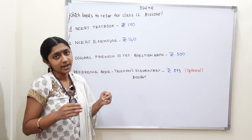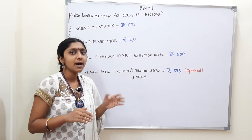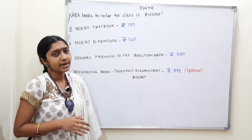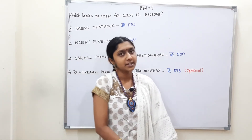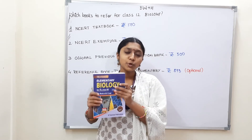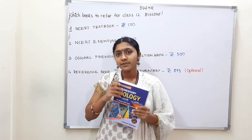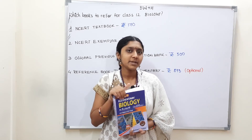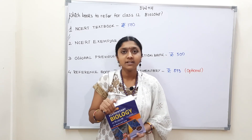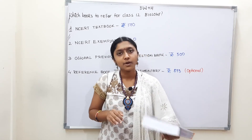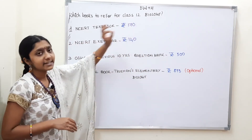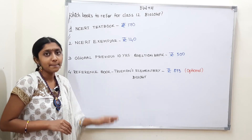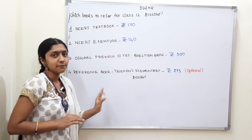Next is a reference book, mostly for Biology. You need to prepare simultaneously with this. This is Trueman's Elementary Biology, Volume 2 — Volume 2 is for Class 12 standard, and Volume 1 is separate. All the topics in Volume 2 are elaborated in detail with different types of questions. This is optional — the most important books are the NCERT textbook, NCERT Exemplar, and the question bank. Refer to this if you need additional preparation.